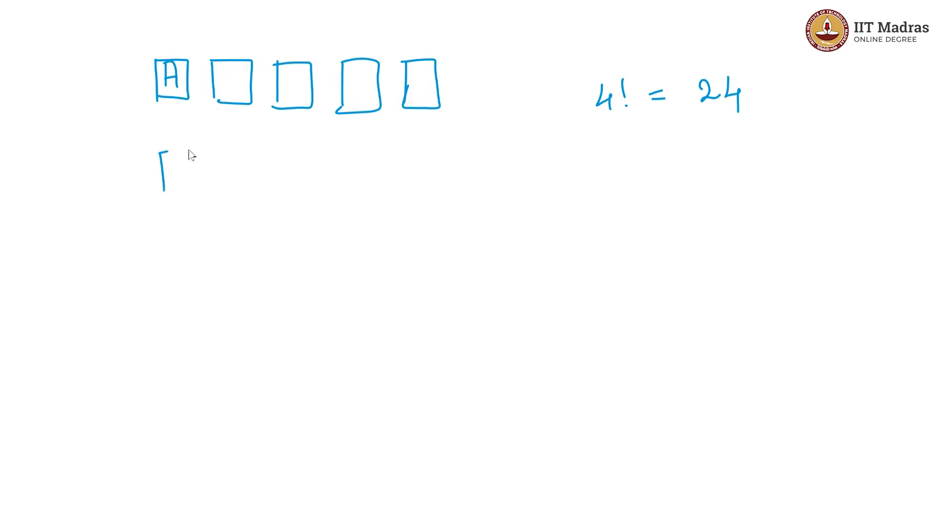Then let us look at the number of words that start with G which is the next in the alphabetical order. And again we have 4, so again 4 factorial which gives us 24 words.